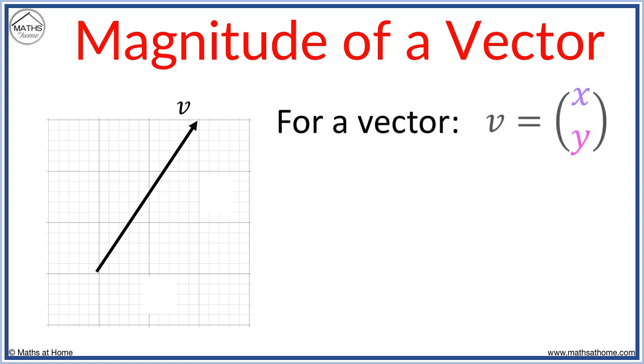We consider any vector with an x component of x and a y component of y. We can see its length is the hypotenuse of the right-angled triangle and can therefore be found using Pythagoras. The magnitude of v is written like so, with lines either side of v.